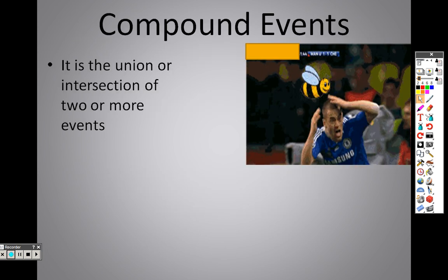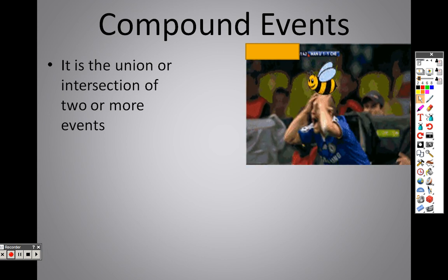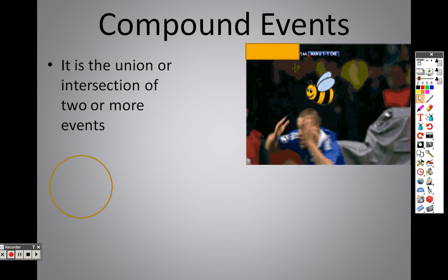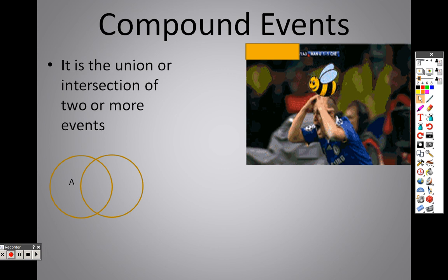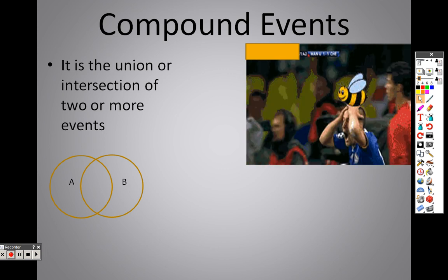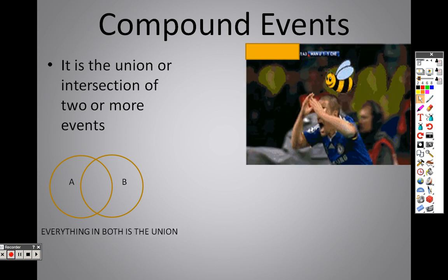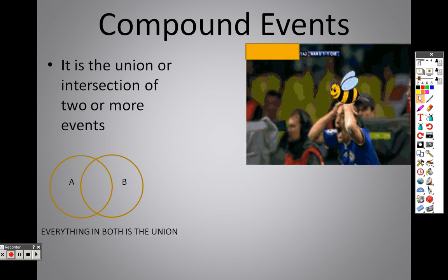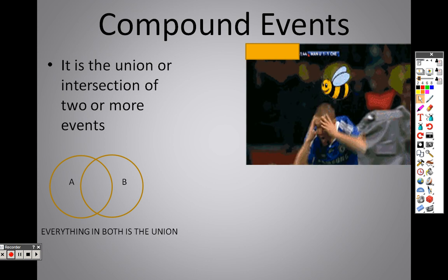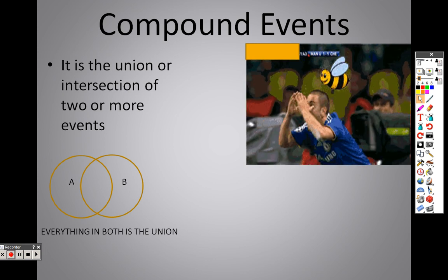Compound events is the union or the intersection of two or more events. To show you with a diagram here, if you have event A, which is the first circle there, and you've got event B, which is the second circle, the union is everything together in both. Every little section of it is the union.